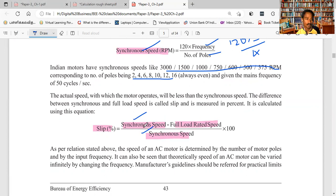When the load speed differs from the synchronous speed, that difference is called slip. The formula to calculate slip is 120 times frequency.